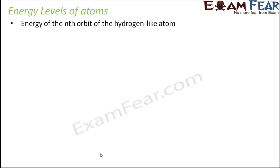The energy of the nth orbit of the hydrogen or hydrogen-like atom is given by minus 13.6 Z² by n² electron volts. We will not discuss the derivation here, as we have already explained this chapter in detail — just refer to the class 12 physics video on atoms for all the derivations.